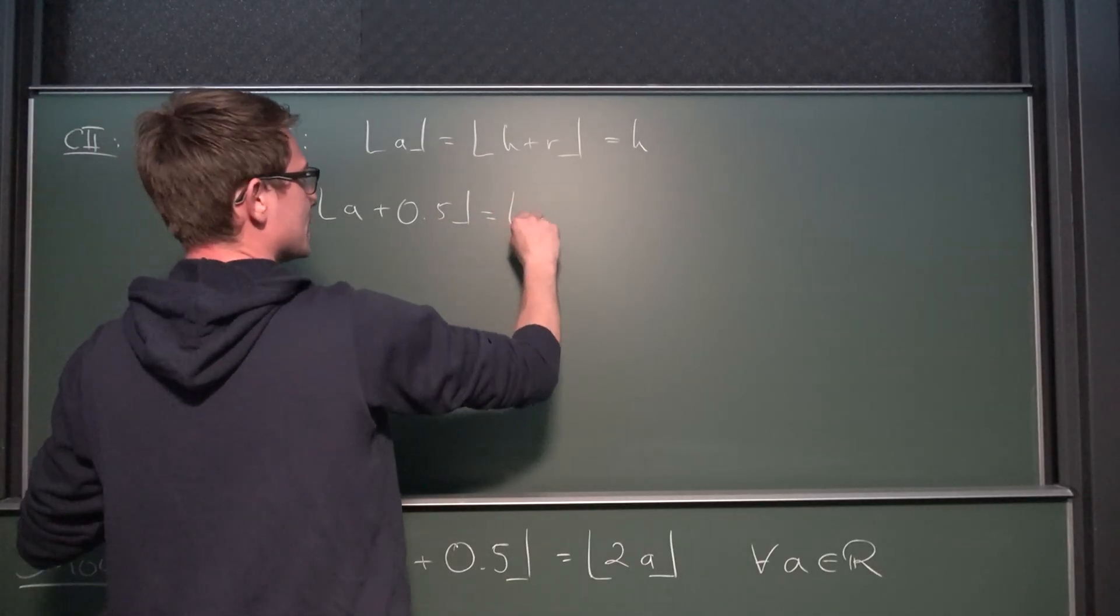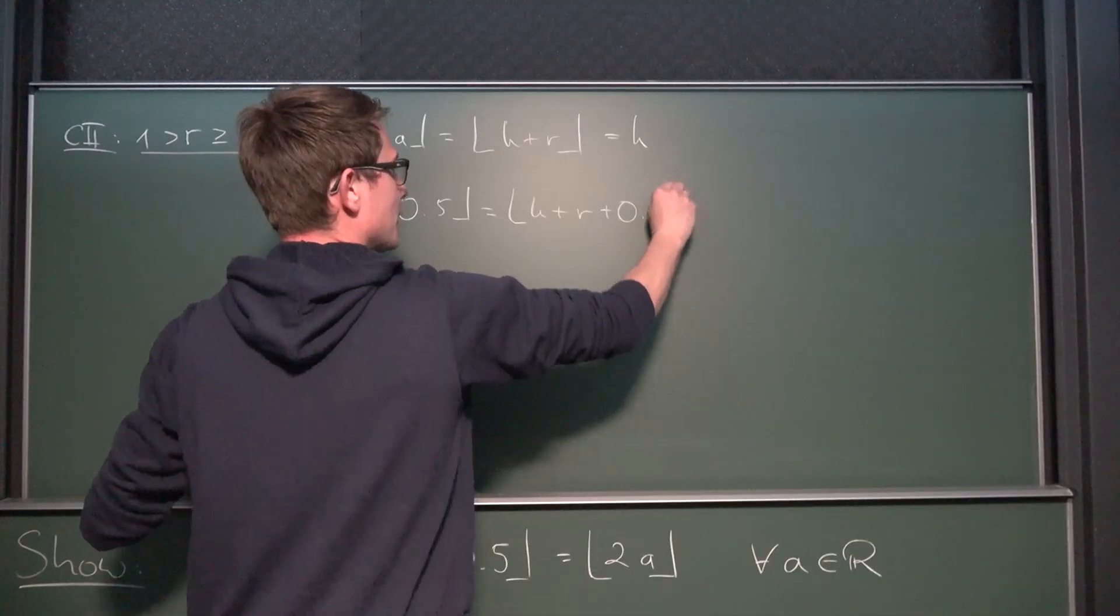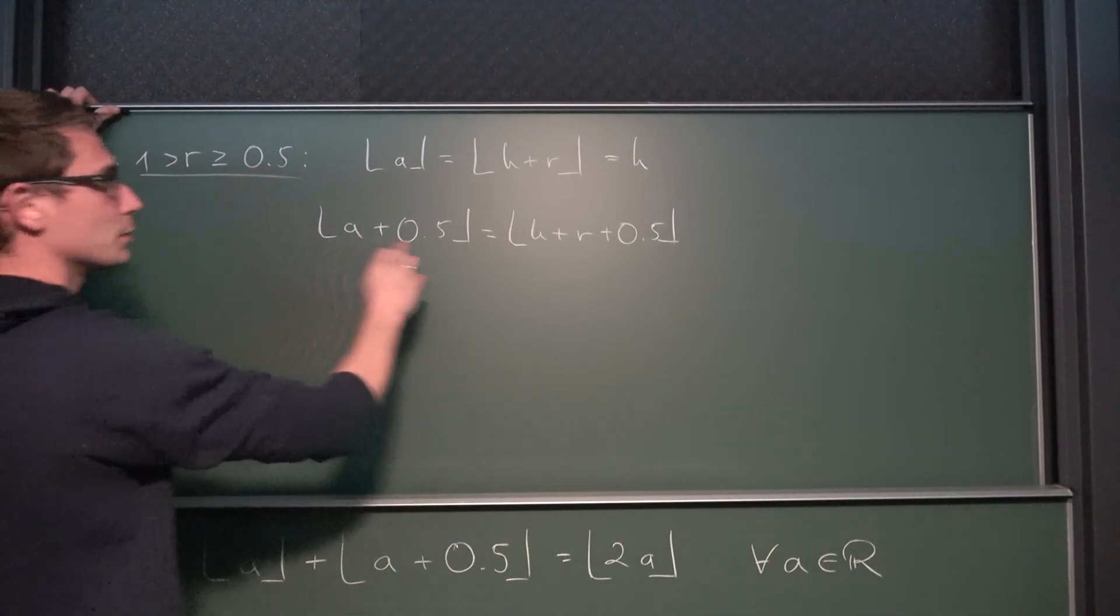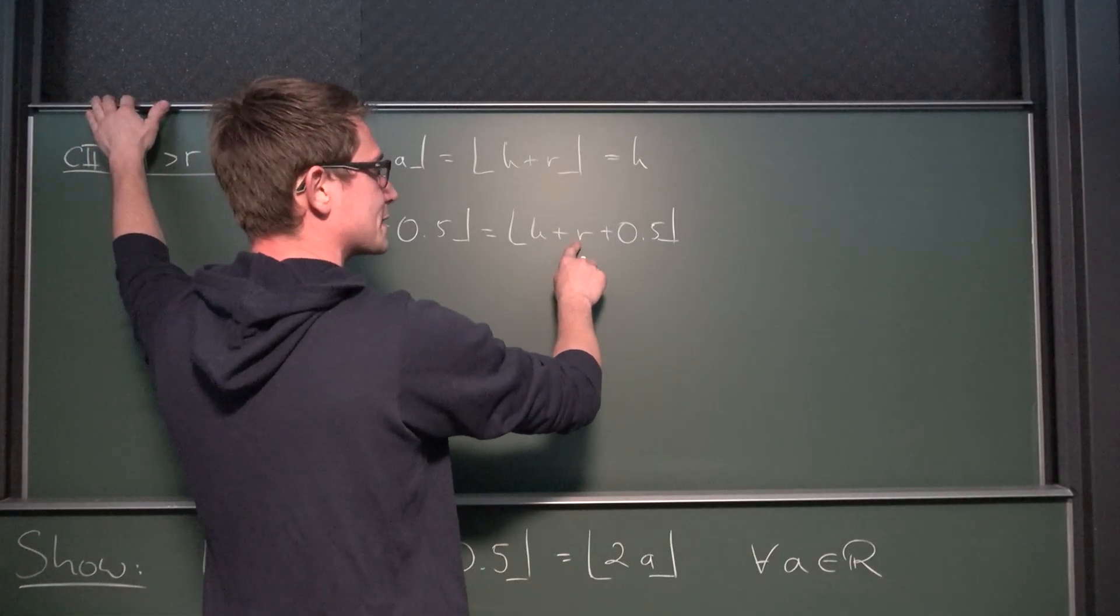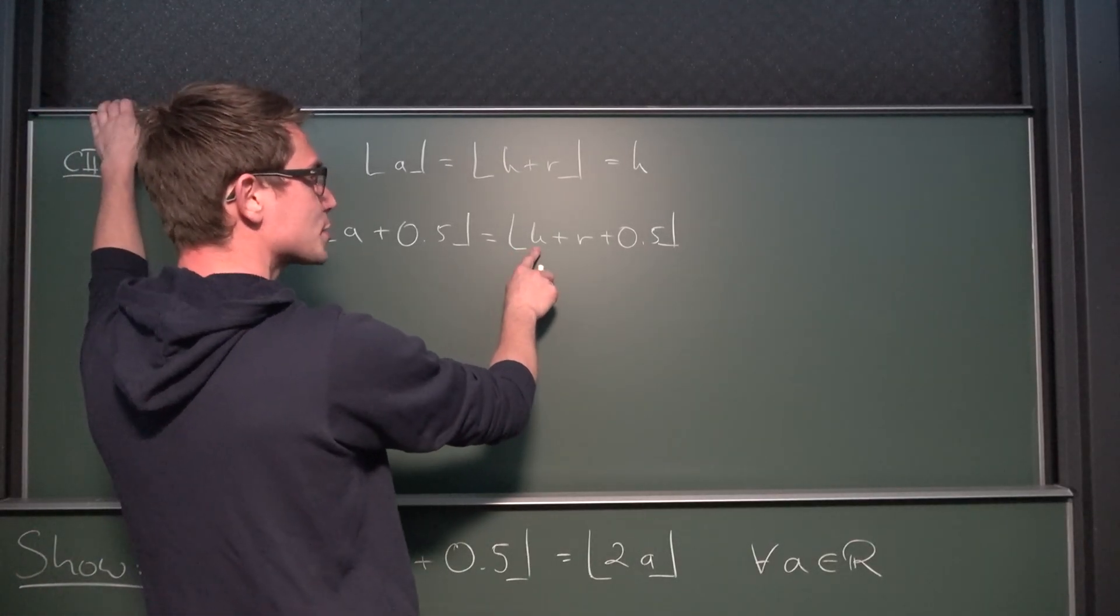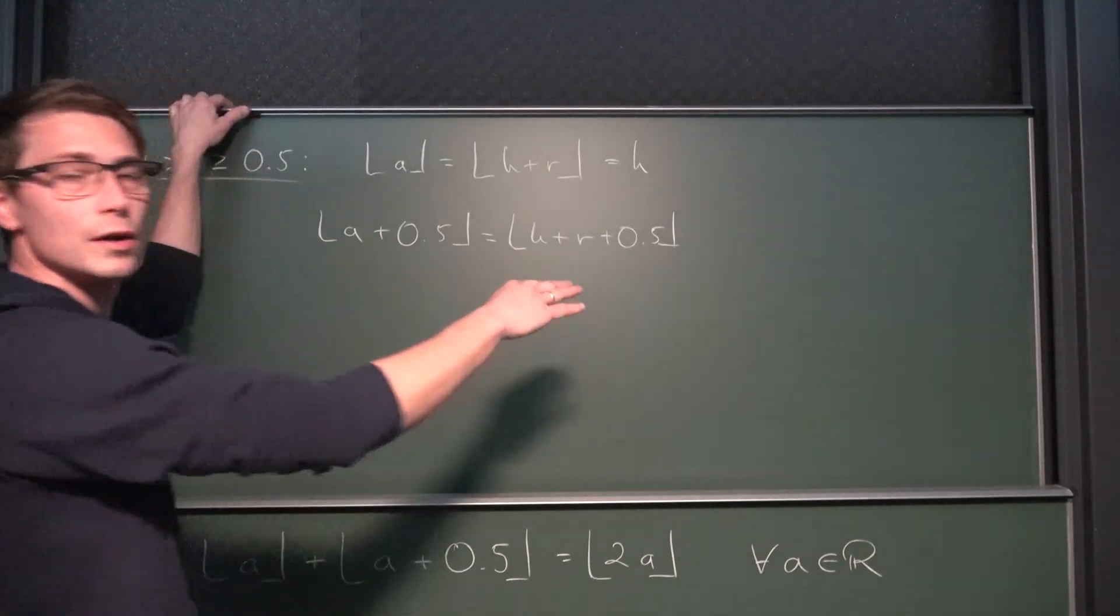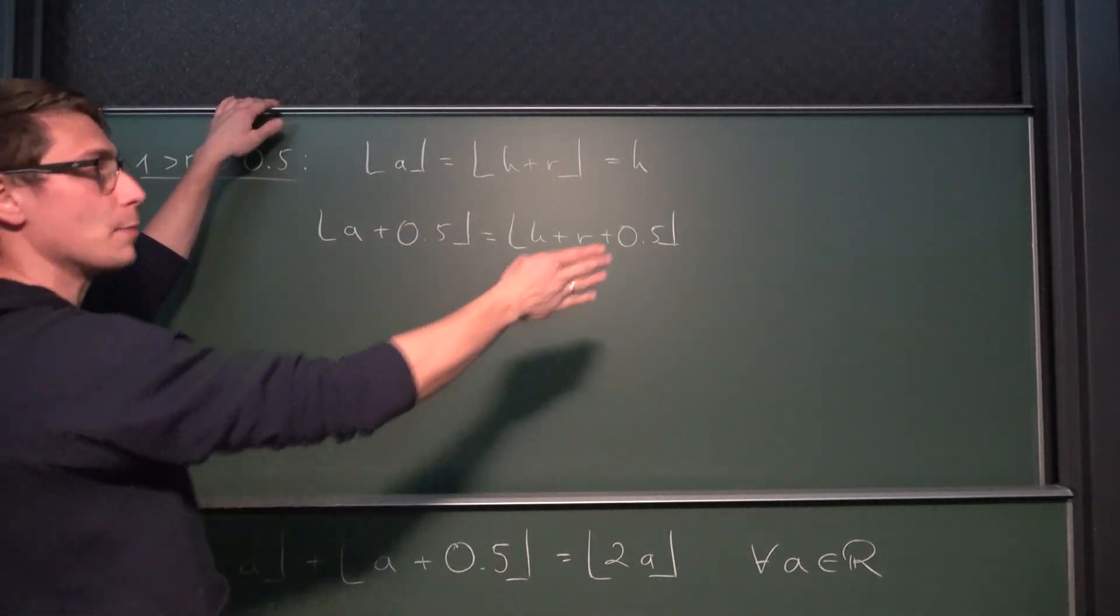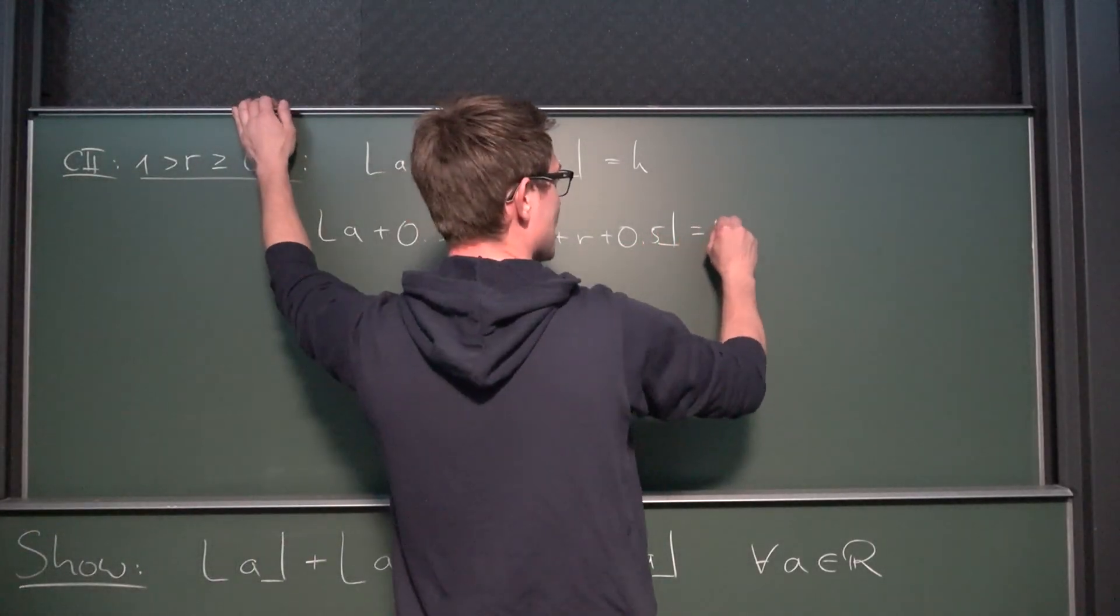Now what about the floor of A plus 0.5? Now for this case, what we are going to get is the floor of k plus r plus 0.5. As mentioned before. Now since r is greater or equal to 0.5, no matter what we do, we are always going to exceed 1 on this less part right here. Meaning we are also going to get, for example, if k is equal to 4, we are going to go over 5. So this is going to give us 5.1, for example, rounding down to 5, which would be the same as 4 plus 1. So k plus 1 in our example.